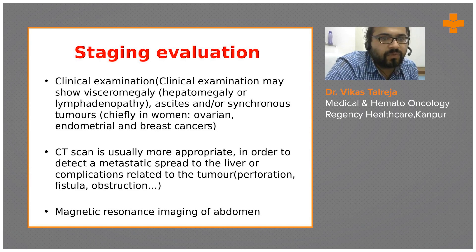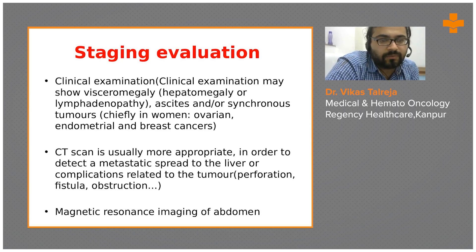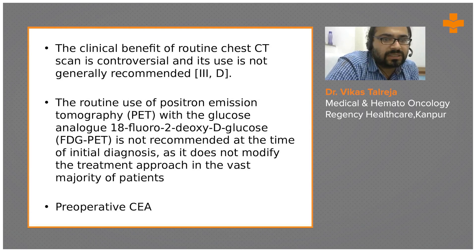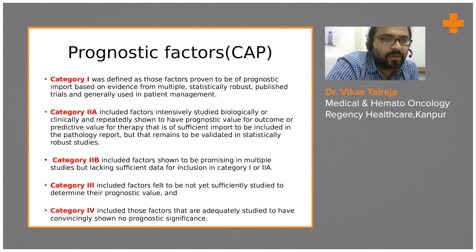Staging evaluation includes clinical examination for visceral megalies, hepatomegaly, lymphadenopathy, ascites, synchronous tumors, and hereditary stigmas such as ovarian, breast, or endometrioid cancers. CT scan is most appropriate for detecting metastatic spread to the liver and associated complications such as perforation, fistulas, and obstruction. The clinical benefit of routine MRI of the abdomen is controversial and not usually recommended. Routine use of PET-CT is also not recommended as initial diagnosis as it does not modify treatment in most patients.